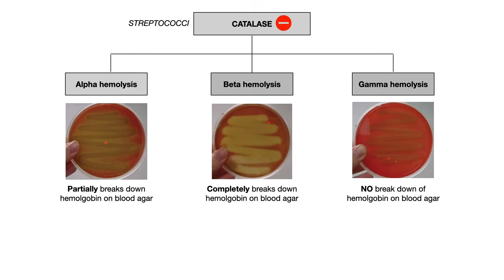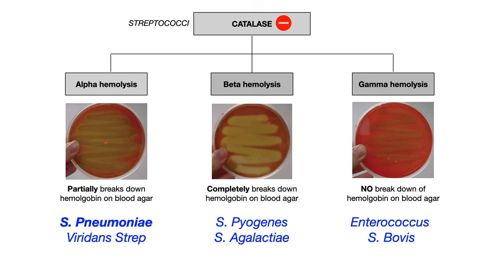When talking about streptococcal organisms, the overall category is gram-positive cocci that are catalase negative. The test writer will then tell you it's alpha, beta, or gamma hemolytic. If you're dealing with gram-positive catalase negative strep that is alpha hemolytic, it can be either Strep pneumoniae or viridans strep. If beta hemolytic, you're talking about Strep pyogenes or Strep agalactiae. And if gamma hemolytic — meaning no hemolysis — you're talking about Enterococcus or Strep bovis.